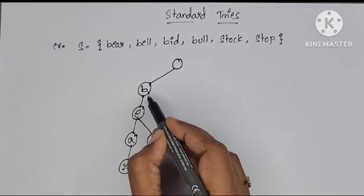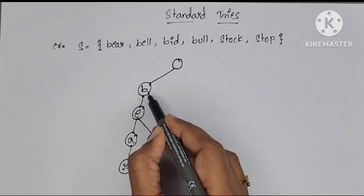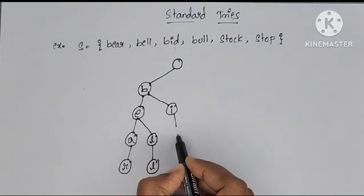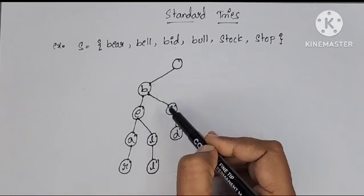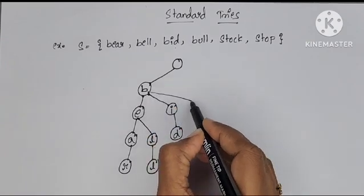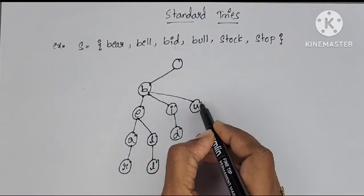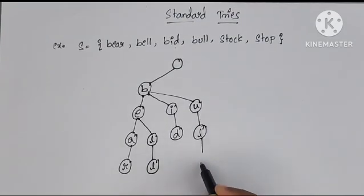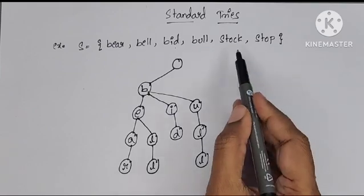The next string is bit. B is already there, I do not have to create another node for B. I is not there, we have to create like this. We have to store strings. One more word is there, that is bull. B, U, the next letter L and L. Like this for every letter we have to create the node.